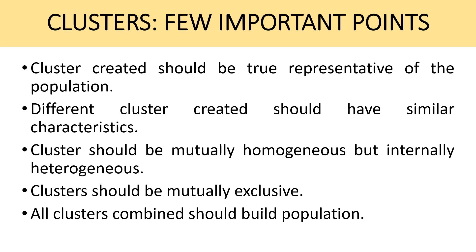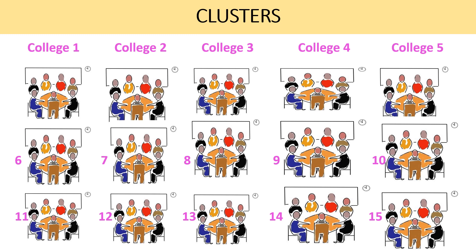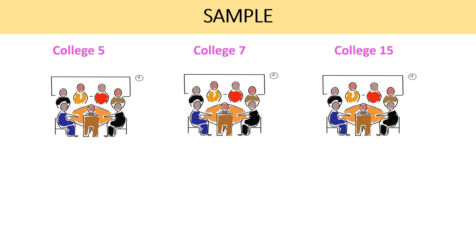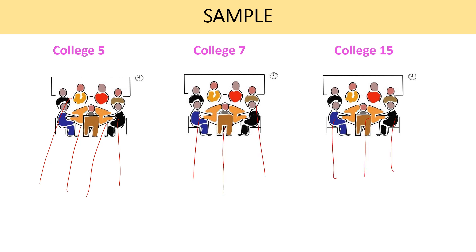These different colleges of education are my clusters — that was the first step. For the second step, through simple random sampling I select few clusters. Let's assume I draw college 5, cluster 7, and cluster 15 as my sample. That completes the second step of selecting sample units. For the third step, I need to survey each teacher educator from these three colleges — all teacher educators within each selected college — to collect my data.